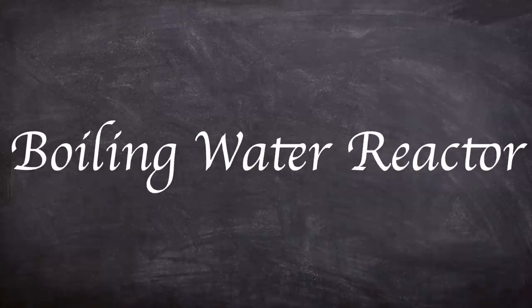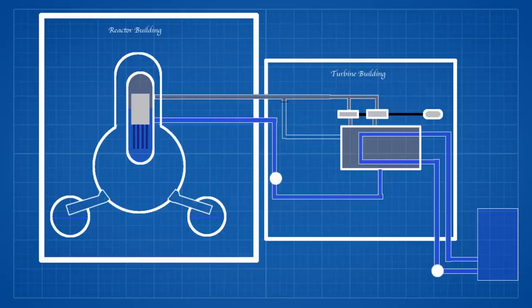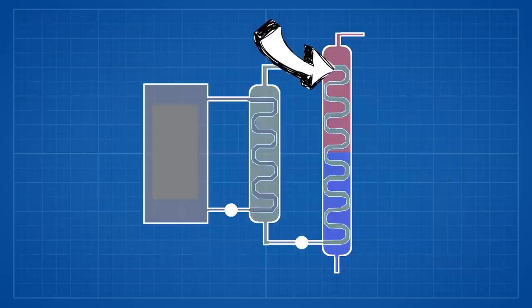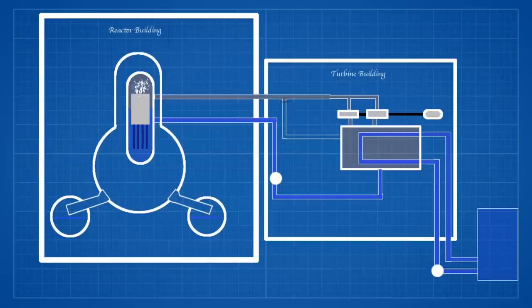Right before we dive into the disaster let's have a look at how a boiling water reactor works as this type of reactor is not often covered on this channel. For the purpose of simplicity this is a general overview of how the GE BWRs work. However there were many variations between the three types used at the site. A BWR design uses demineralized light water for both cooling and moderation much like a pressurized water reactor. This type of reactor is the second most common type after the PWR. However unlike a PWR which uses the heat of the coolant to create steam in a secondary coolant loop, in a BWR the boiling of the primary coolant is used for the steam.